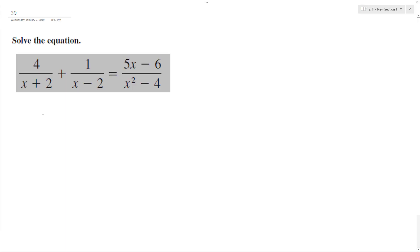So first thing I'm going to do is find the common denominator. On the right side of the equation, x squared minus four is difference of perfect squares, which reduces down to x minus two times x plus two. So this looks like it's going to be my common denominator.